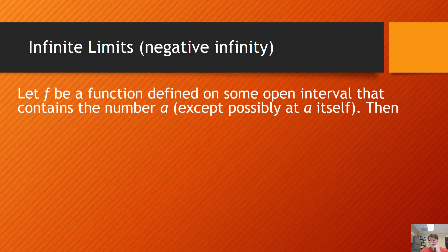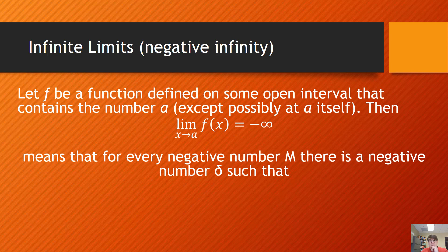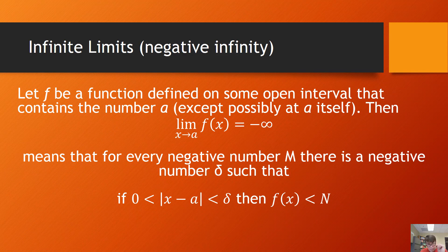Finally, the definition of negative infinity does the same thing except it goes down. Let f be a function defined on some open interval that contains the number a. The limit as x approaches a of f of x equals negative infinity if for every negative number n, there is a delta such that f is less than n. In other words, as delta gets smaller, n gets lower and lower. That's all this is saying. There you have it — epsilon-delta confusion.